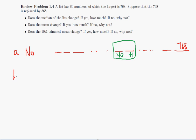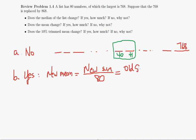For part B, the answer is yes. The mean does change. And the reason is that the new average, or the new mean, is going to be equal to the new sum of the entries divided by 80. Well, the new sum of the entries is going to be the old sum of the entries plus 100, because the largest number got increased by 100.